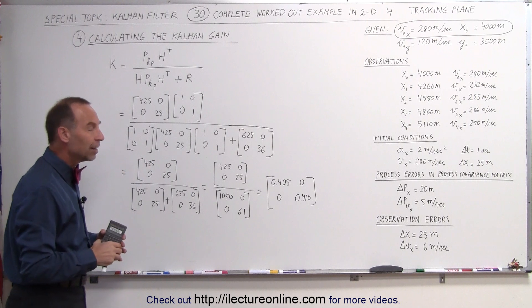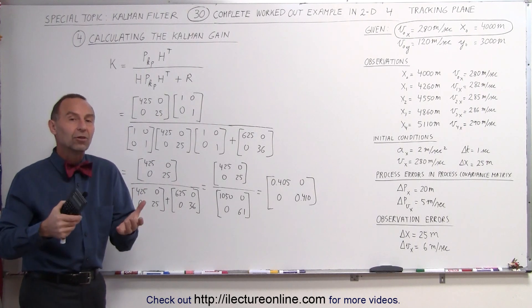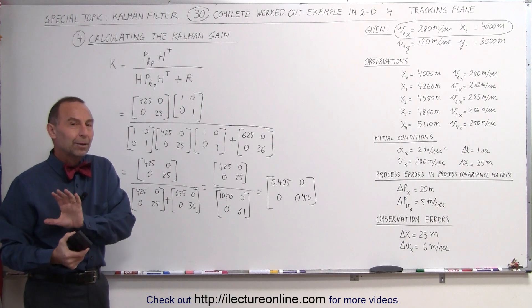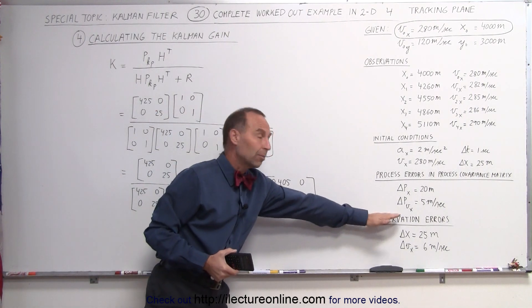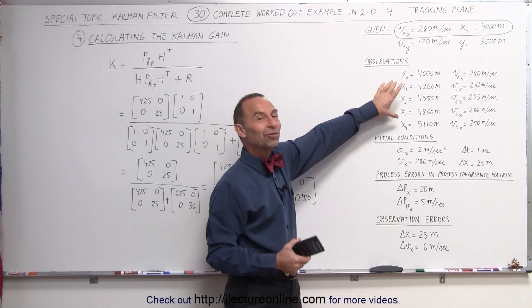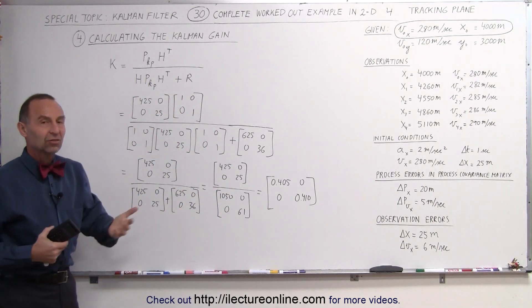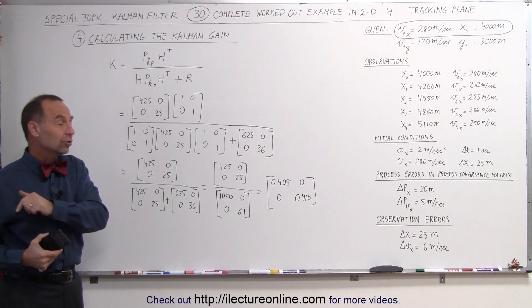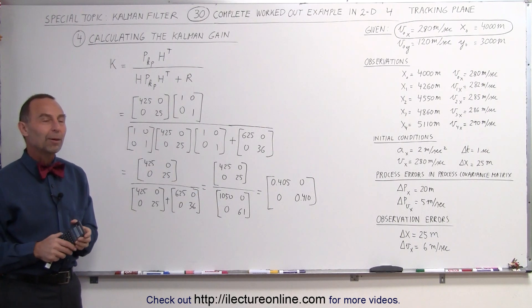So that's now what we call the Kalman gain matrix. We're now going to use that Kalman gain matrix to update the predicted state. Remember we had a predicted state, the Kalman gain multiplied times the new observations. Where are the new observations? They're right over here. The new observations will then tell us where we think the plane is going to be in the next iteration. So stay tuned and see how we use that Kalman matrix to update our new observations.